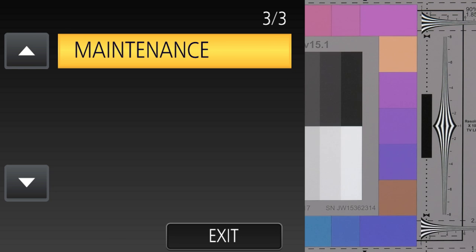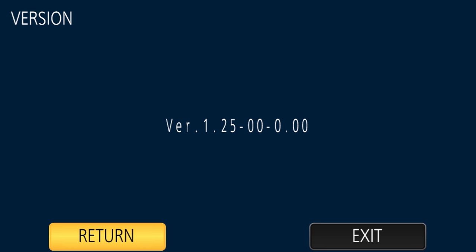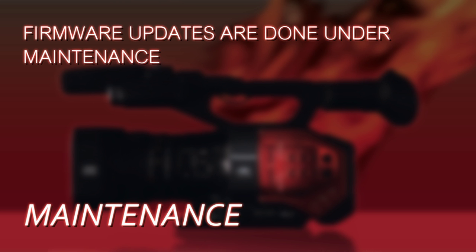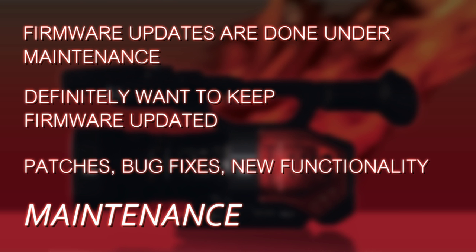The last menu is Maintenance, for functions like determining how many hours the camera has been on, what the current firmware version is, or if you want to update the firmware. You definitely want to stay up to date — there may be new features or bug fixes that Panasonic posts on their website. Check back frequently, and if there's a firmware update, download it and come to this menu to install it.